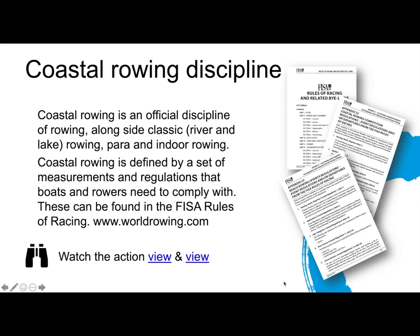Coastal rowing is an official discipline of rowing alongside classic rowing — sometimes people call that river and lake rowing — para rowing and indoor rowing. It's defined by a set of measurements and regulations for the boats and the rowers, and these regulations can be found in World Rowing's Rules of Racing.